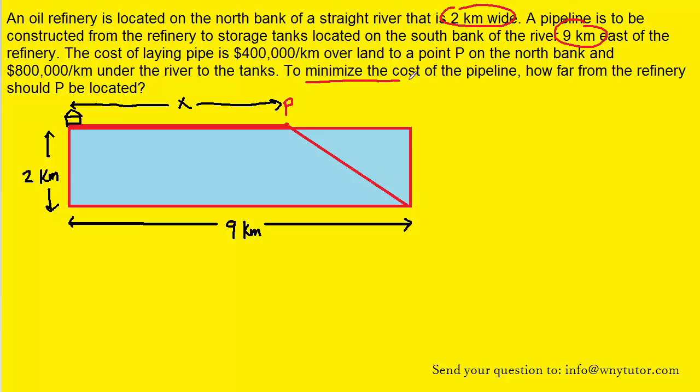The question is asking us to minimize the cost, so we're going to have to come up with a cost function for this pipeline. There will be two parts to the costs: the cost required to lay the pipeline across the land, and then the cost required to lay the pipeline over water. And those two costs are different. Over land, it's $400,000 per kilometer. And over the water, it's $800,000 per kilometer.